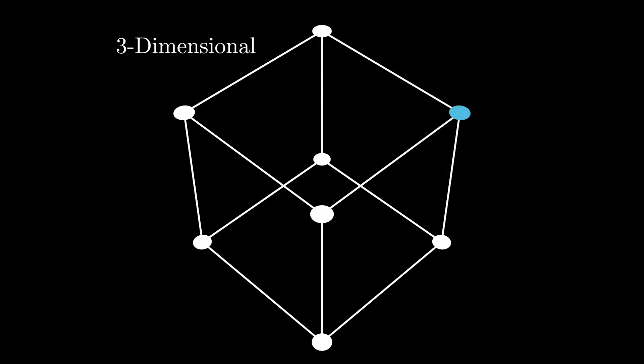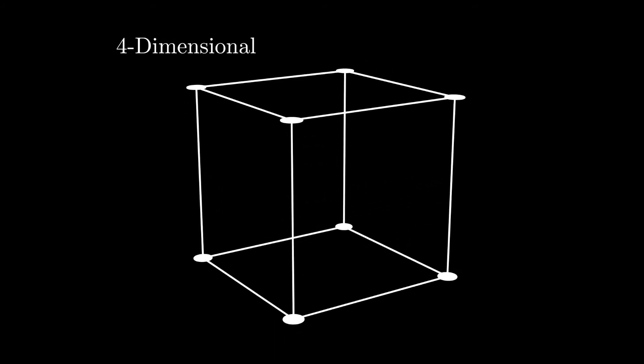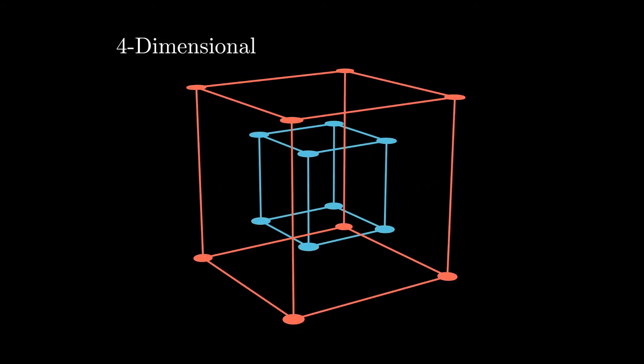I hope you're able to predict at this point how we're going to construct the fourth dimension because we're going to use the same process as we've been using this whole time. We're going to duplicate this three dimensional object and connect the corresponding edges. Some people call this a four dimensional cube and others call it a tesseract. I like the word tesseract just because it sounds cool so we're going to be using that.